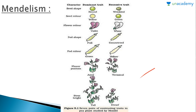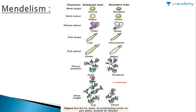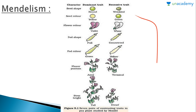The seven characters Mendel studied were: seed shape — dominant form round, recessive form wrinkled; seed color — yellow dominant, green recessive; flower color — violet dominant, white recessive; pod shape — full dominant, constricted recessive; pod color — green dominant, yellow recessive; flower position — axial dominant, terminal recessive; and stem height — tall dominant, dwarf recessive.